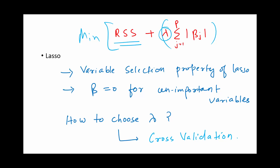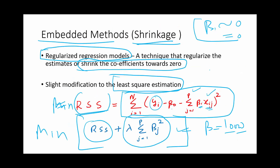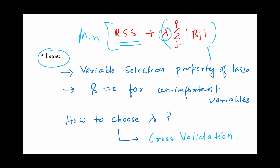What is lambda? It is called a tuning parameter and we will talk about it later. In ridge, your betas will tend to be zero but will not exactly be zero. Whereas in lasso, some of the coefficients — some of the betas — will be exactly zero. So when the coefficient is zero, the variable with which that coefficient is associated is actually getting dropped from the model.